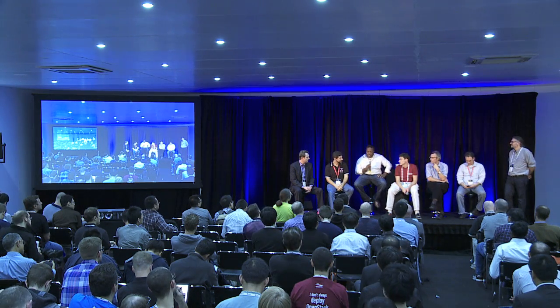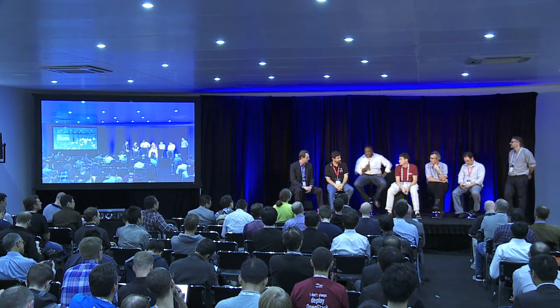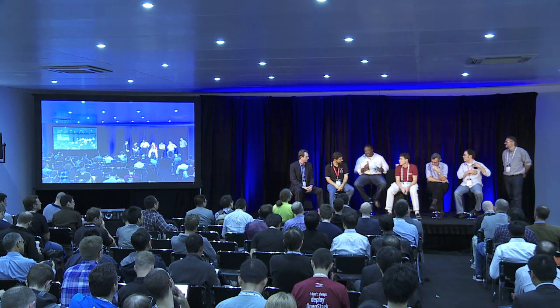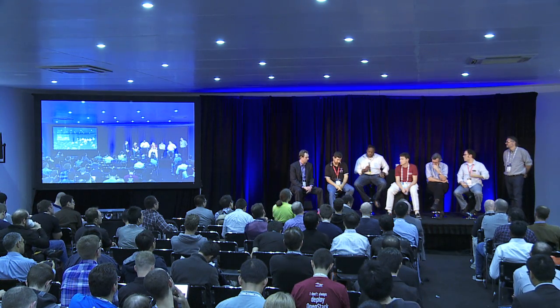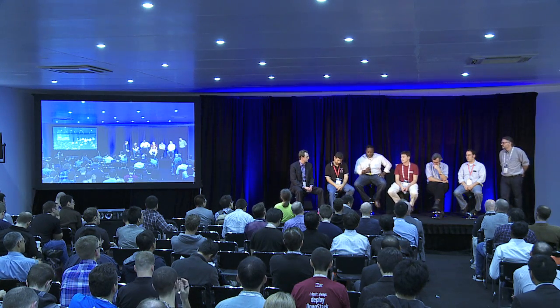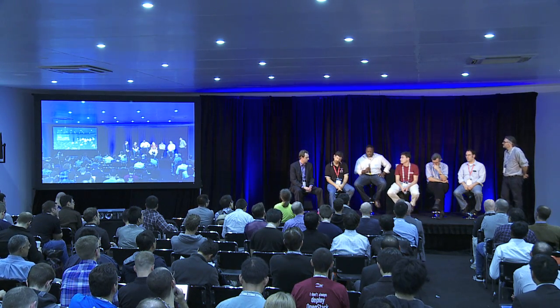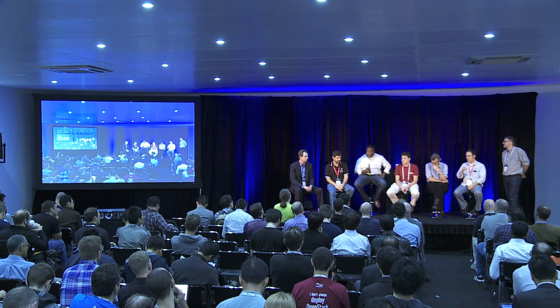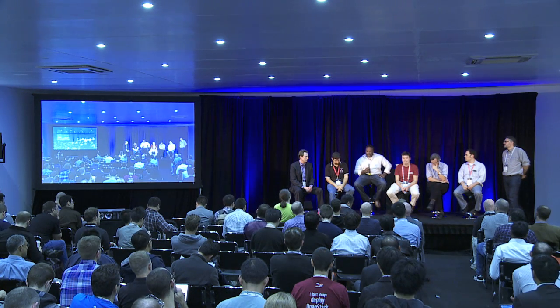I am Keith Basil, principal product manager for OpenStack at Red Hat. We have three tools in general. One is called PackStack — basically for proof-of-concept installs on RHEL derivatives like CentOS and SELinux. We have a tool called Foreman, which we support; our team in Israel is leading the community around Foreman — it's similar to Fuel in that there's a GUI and bare-metal provisioning. Long-term, our strategy is to use Triple O.